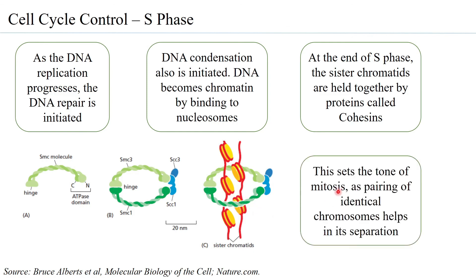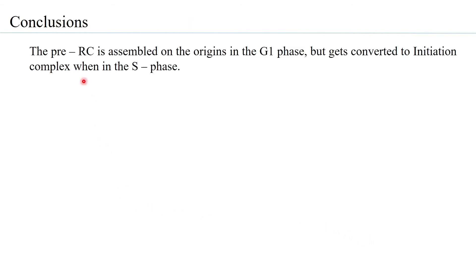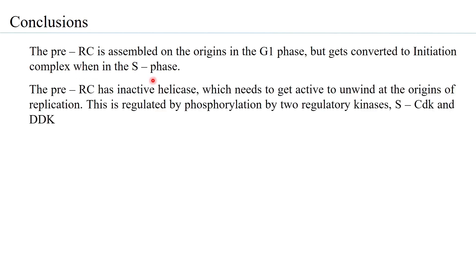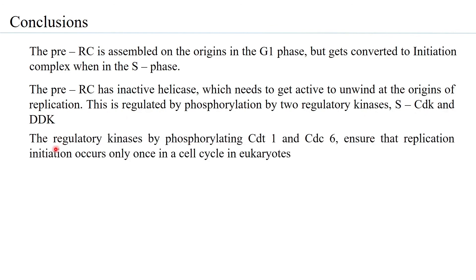This pairing of identical chromosomes sets the tone for mitosis and helps in their separation. In conclusion: the pre-replication complex is assembled on origins in the G1 phase but is converted to an initiation complex in the S phase. The pre-replication complex has an inactive helicase which needs to become active to unwind the DNA at origins of replication.